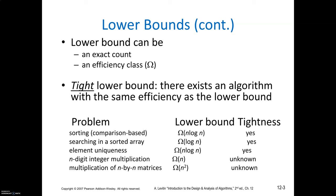A lower bound is an exact count. Lower bound uses omega notation. You have already learned the asymptotic notations: big O, omega, and theta. Omega is the lower bound, big O is the upper bound, and if the algorithm has a similar order of growth, you use theta notation.